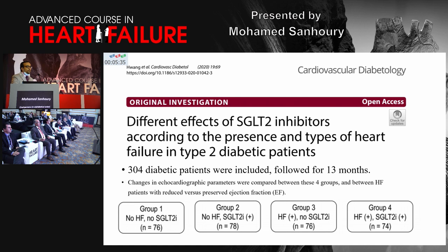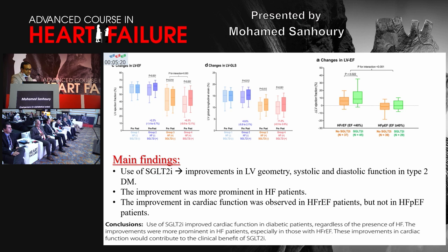SGLT2 inhibitors are recommended in guidelines as class 1, as part of optimal medical treatment. A trial including more than 300 diabetic patients randomized to SGLT2 inhibitors — whether or not they had heart failure — found that SGLT2 inhibitors improve LV geometry, systolic and diastolic function in type 2 diabetic patients. The improvement was most prominent in heart failure patients, specifically in HFrEF rather than HFpEF. The highest recommendation is thus to use these drugs in HFrEF patients to improve cardiovascular mortality and hospitalization.